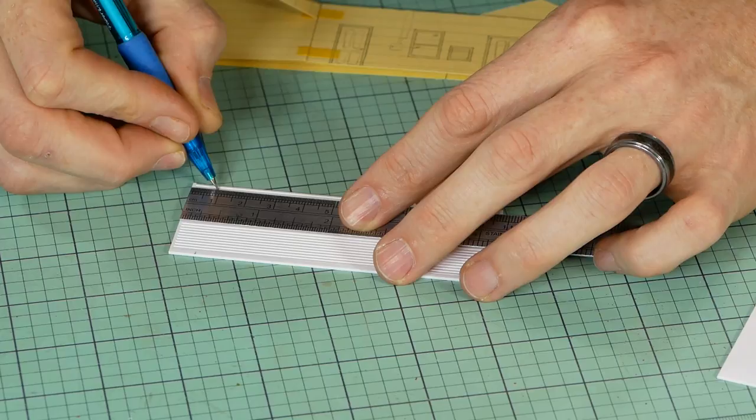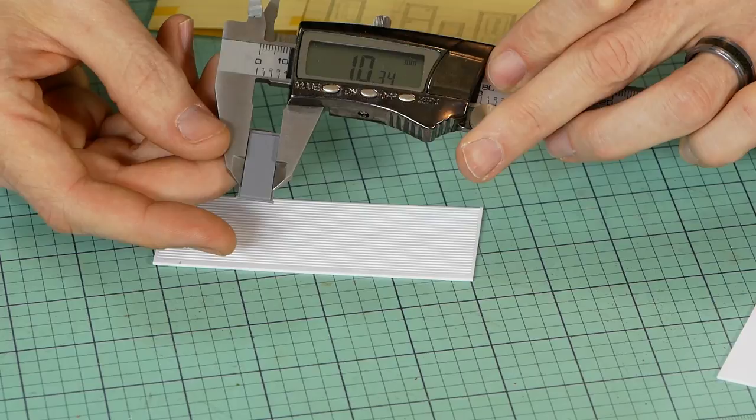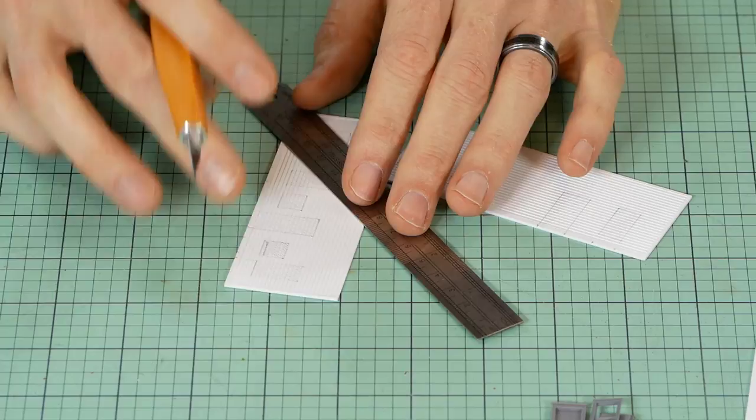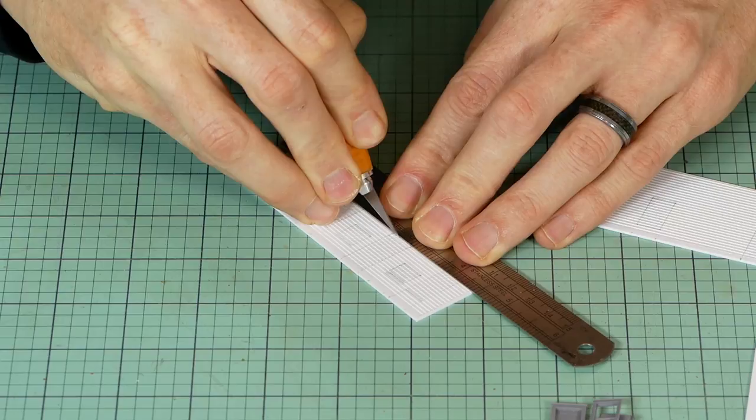The window and door openings are cut into the walls. These need to be very precise in order for the door to fit without any gaps showing. Using a digital caliper makes it very easy to get exact measurements.